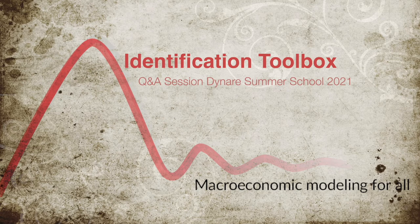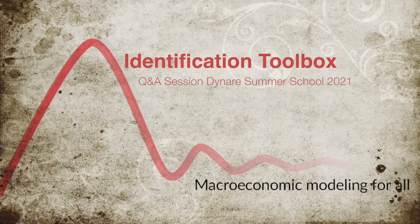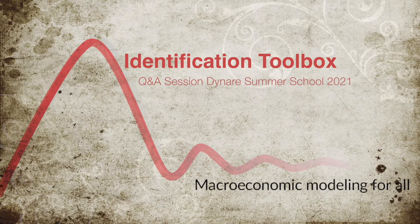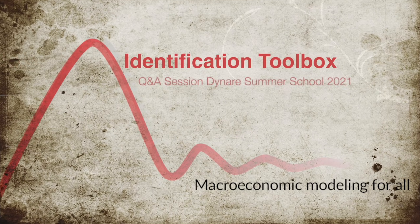That's a totally valid and good approach. You're working with your model, getting robustness checks. Even if you don't put all of this in the paper, if a referee asks about a variable you already have a feeling for whether it gives good identification. You're essentially already conducting a sensitivity analysis. Really have a look at Marco's talk about the Dynare sensitivity toolbox, because this covers much more than just identification.